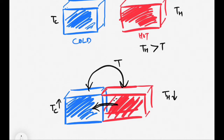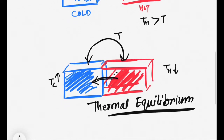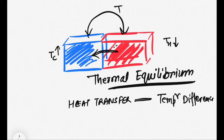This condition is known as thermal equilibrium. Once the two objects reach thermal equilibrium, there is no more heat transfer between those objects. That means heat transfer happens because of a temperature difference. So if there is a temperature difference between two objects or substances and you mix them or connect them, there is a heat transfer from high temperature to low temperature, and this will continue until they reach the same common temperature.